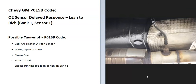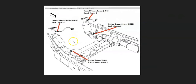The first thing to do when you get this code is locate the bank one sensor one oxygen sensor. There can be differences in where they're located depending on the year and engine type, so it's always a good idea to get a diagram. For example, on a 2008 Chevy Silverado 1500, bank one sensor one is located right here — it's before the catalytic converter. Sensor one is also called the upstream oxygen sensor; sensor two is the downstream oxygen sensor.